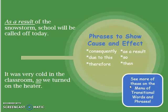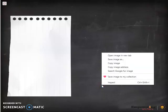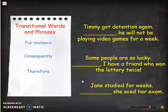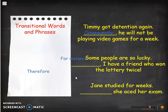Write these cause and effect transition words down with a new bullet point: 'phrases to show cause and effect,' and list these six transitional phrases. Now for practice, we have 'for instance,' 'consequently,' and 'therefore' — figure out which one belongs in which sentence. Pause the video and see if you can get it correct. 'Timmy got detention again. Consequently, he will not be playing video games for a week.' 'Some people are so lucky. For instance, I have a friend who won the lottery twice.' 'Jane studied for weeks. Therefore, she aced her exam.'